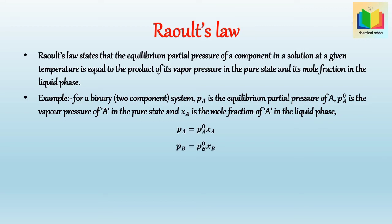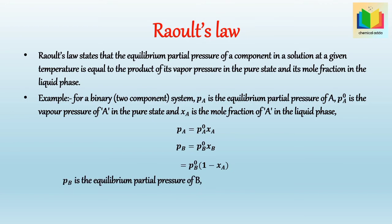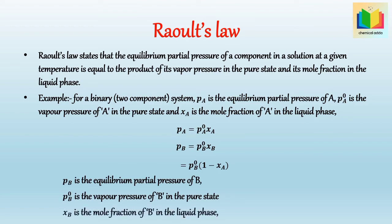Since xA + xB = 1, we can write pB = pB⁰ · (1 − xA), where pB is the equilibrium partial pressure of B, pB⁰ is the vapor pressure of B in the pure state, and xB is the mole fraction of B in the liquid phase.